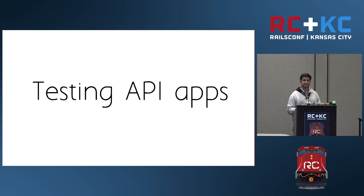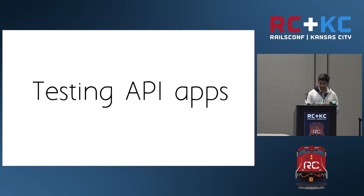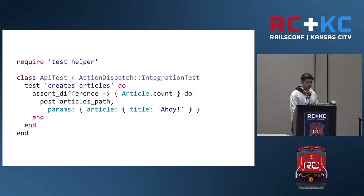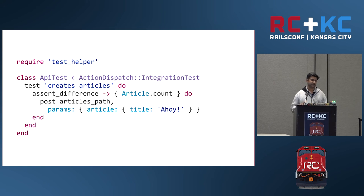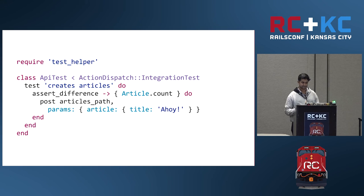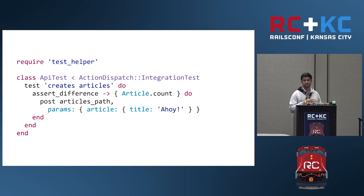Now we will see how to test API apps. Rails 5 introduced API-only apps which you can create using `rails new --api`. In a typical API-only app, we only deal with JSON and XML — we don't generate HTML. Our unit tests and model tests remain the same. But there is a change for testing controllers. For a JSON request in Rails 4, you had to pass content-type headers, convert data to JSON before passing it, and specify the format as JSON on the URL — a lot of things to do manually.